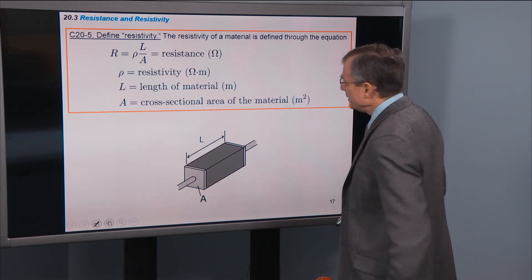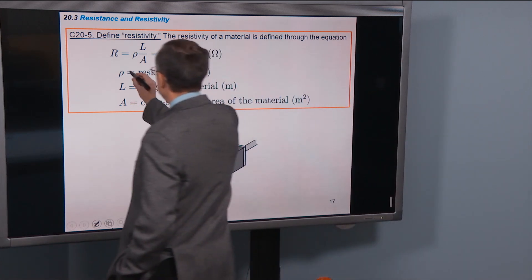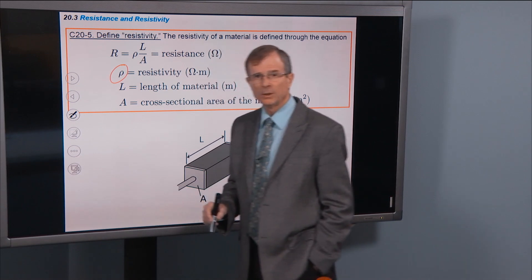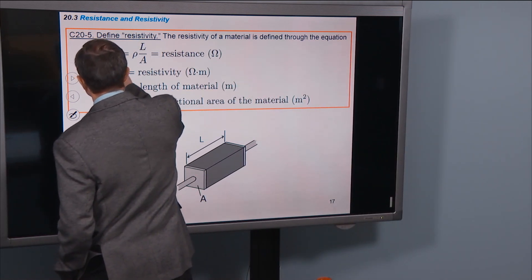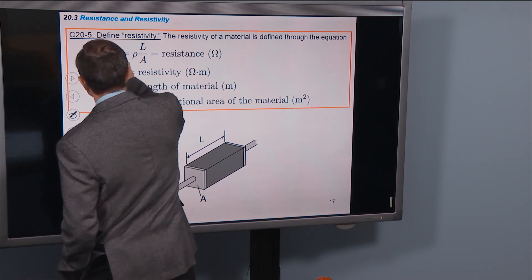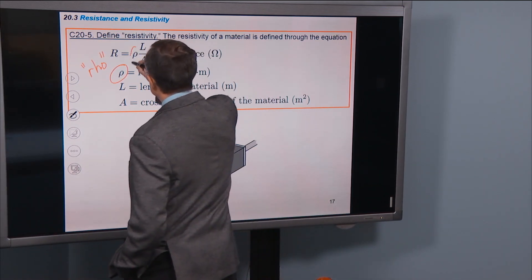So definition of resistivity. The resistivity is denoted by the Greek symbol Rho and it appears here in this definition.